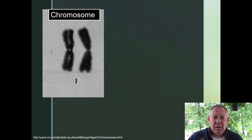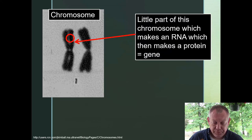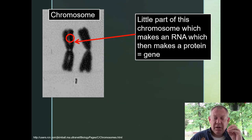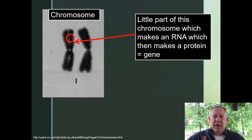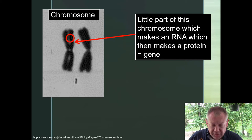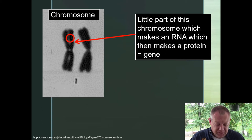Here's a picture of a pair of chromosomes. A little portion of this chromosome is where you're going to find a gene. Any portion of that chromosome that codes for RNA — that's going to be a gene. Remember: DNA makes RNA makes protein. The whole chromosome does not make RNA. There are only discrete portions of the chromosome that make RNA, which then go to make protein. Those discrete portions of the chromosome — that's what a gene is.